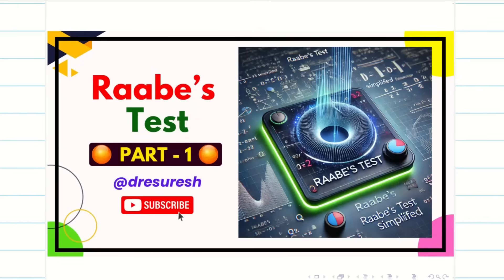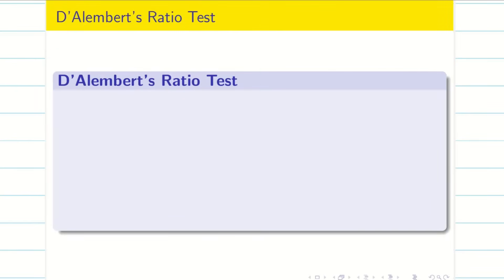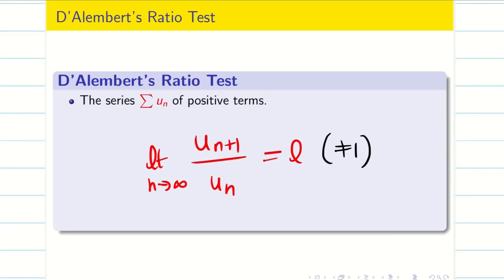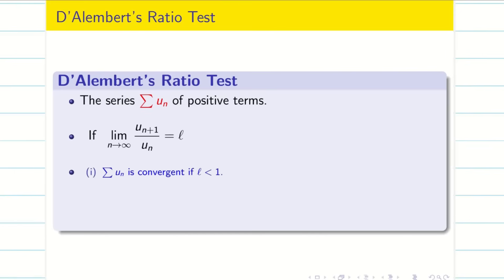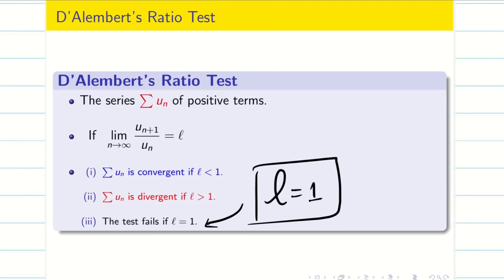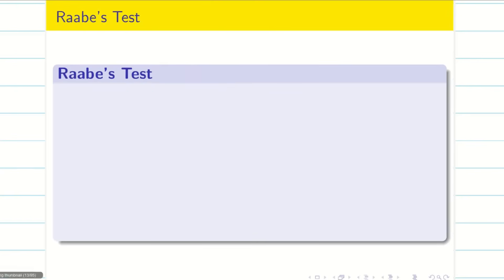In today's session, we are going to see some problems on Raabe's test. Quick recap on ratio test: if you take a positive term series un, find the nth term un and the n+1th term. When limit n tends to infinity gives a finite value l, and if l is less than 1, summation un converges; if greater than 1, it diverges. If l equals 1, ratio test fails. So ratio test has a drawback — it fails when l equals 1. When ratio test fails at that particular point, there comes a new test to find the solution for that value: that is Raabe's test.